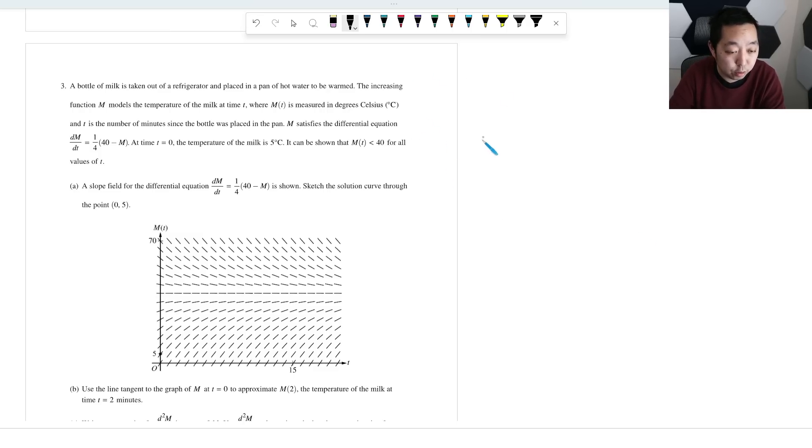All right, let's take a look at question three. This is on the AB and BC exam for AP Calculus 2023. The solutions aren't out yet. They're not going to be out for a few months. So these are my best guess at the solutions. And if I have any corrections, I will put it in the comments as a pinned comment. A bottle of milk is taken out of the refrigerator, placed in a pan of hot water to be warmed. The increasing function M,